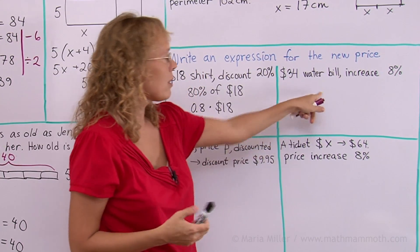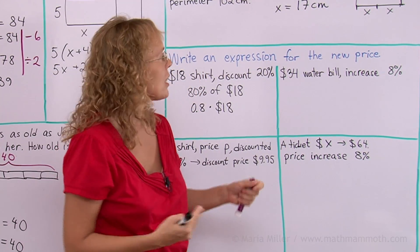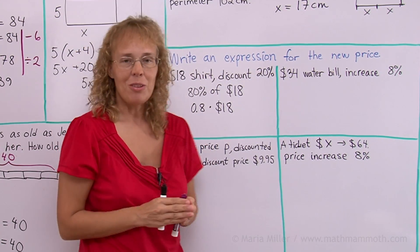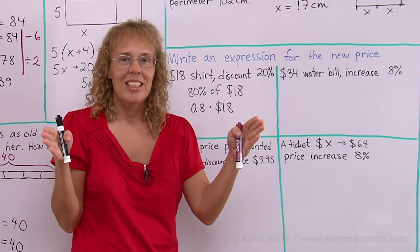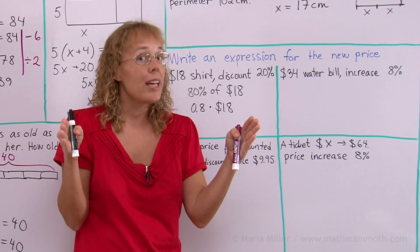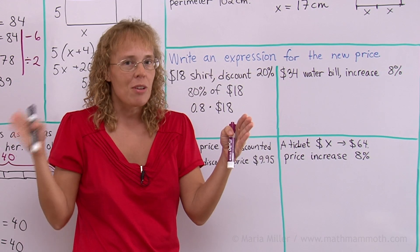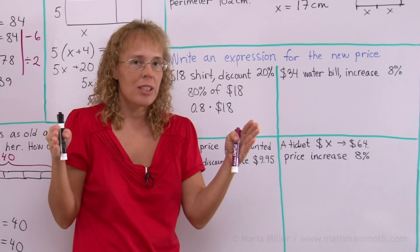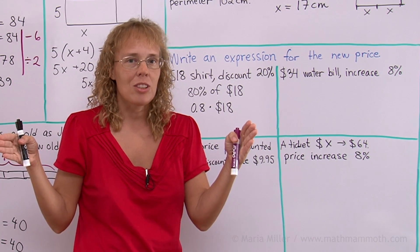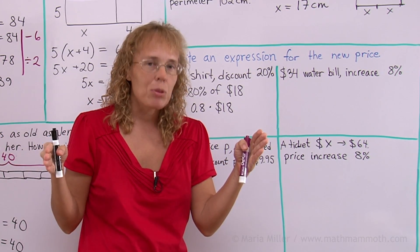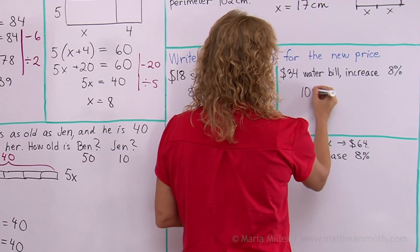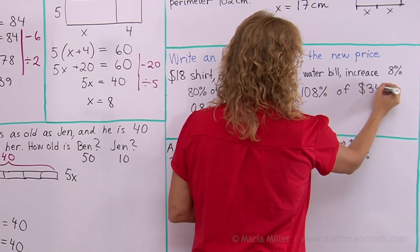Over here we have a water bill that has been $34. It is increased by 8%. Now the original water bill is again 100%. It is $34, 100%. But now it is increased by 8%. So you add 8% to 100%. So the new water bill is 108% of $34.